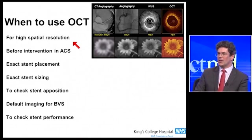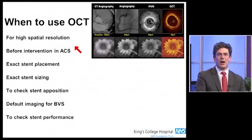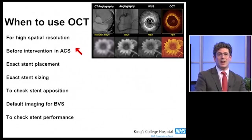The way we're using OCT is in multiple phases within the interventional process. Really at the start of the procedure, before intervention, it's coming into its own especially in the assessment of patients with acute coronary syndromes. It's really helping you make a diagnosis and visualize pathology. The pathology of the arteries is there before your eyes with these very crisp and clear OCT images.